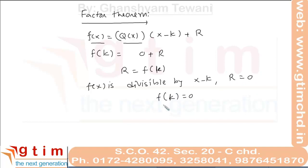So when f(x) is divisible by x minus k, the remainder is 0, and from this we say f(k) equal to 0. This is the statement of the Factor Theorem: when f(x) is divisible by x minus k, the value of f(k) is 0. Obviously, when one of the factors of f(x) is x minus k, dividing by x minus k gives a remainder of 0.